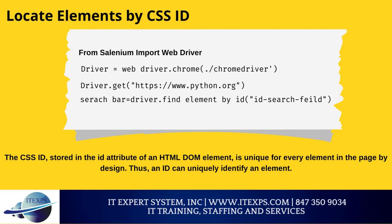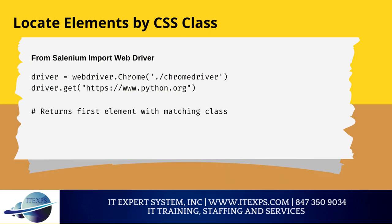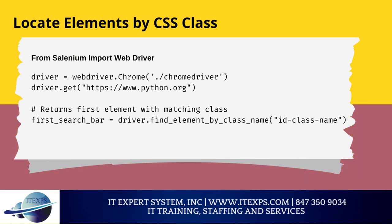Theoretically, every DOM element on a page should have a unique ID. However, in real life, elements may not have an ID, or two elements may share the same ID. In such cases, a different strategy is needed. A second strategy is locating elements by CSS class name, stored in the class attribute of an HTML tag. A CSS class applies to a group of DOM elements. The find element by class name method returns only the first element with the matching class, and raises a NoSuchElementException if no element exists with the given class name.